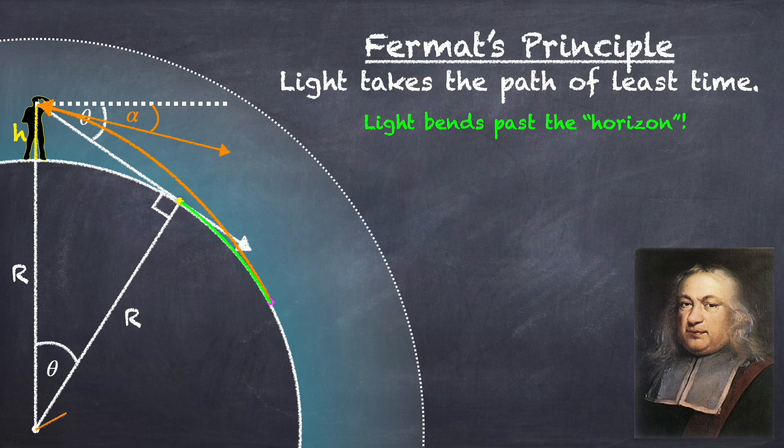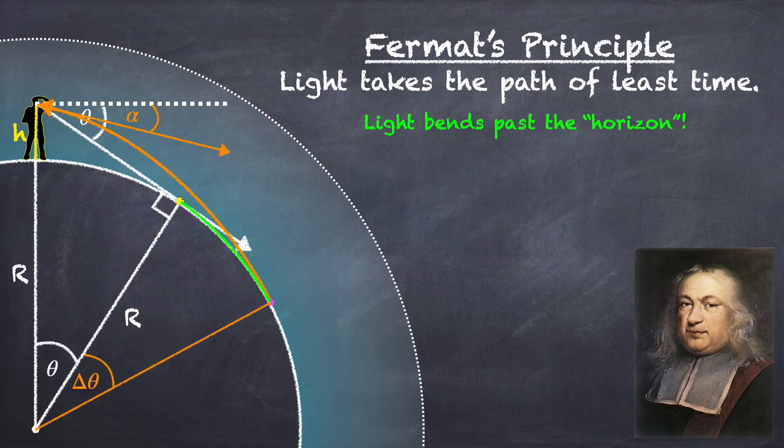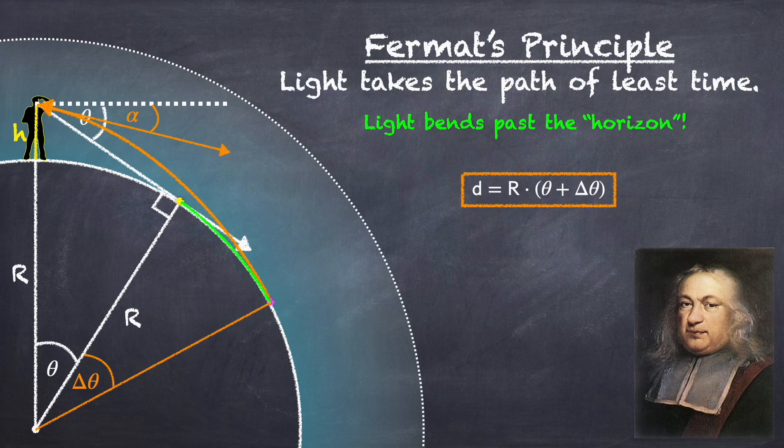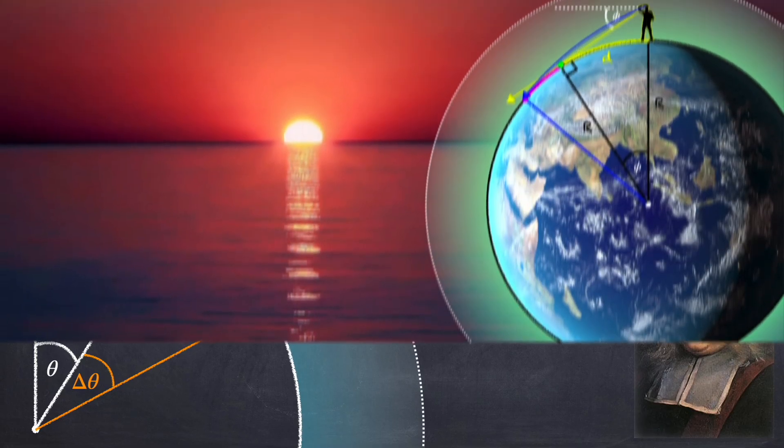So to find this extra distance in green, we have to add this arc length, meaning we have to add an angle delta theta to our original angle theta, and now the distance of the horizon will be the radius of the earth times theta plus delta theta. So now we have to figure out what delta theta is, and I'm going to do that in the next video.